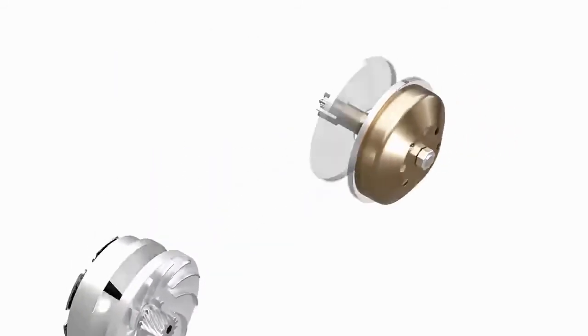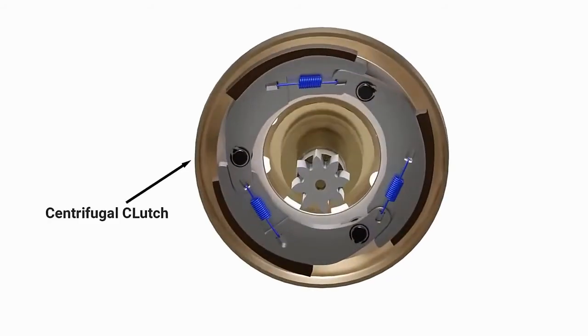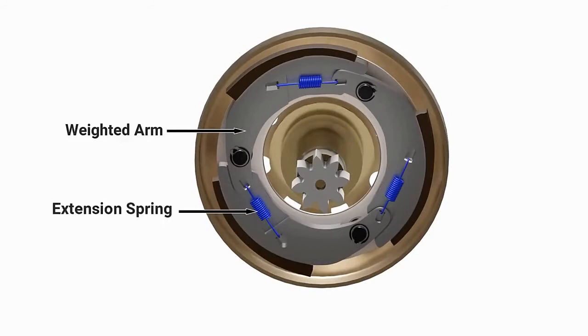This transmission system includes a centrifugal clutch assembly. The inner portion consists of weighted arms held in place by extension springs. These arms are connected to the pulley.